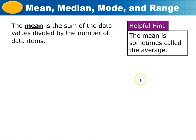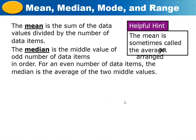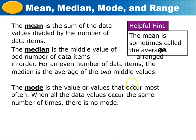Next, the median is the middle value when there is an odd number of data items in order. For an even number of data items, the median is the average of the two middle values — whatever is in the middle is called the median.